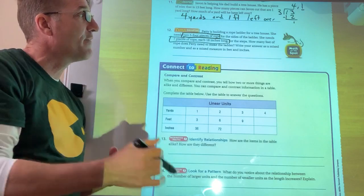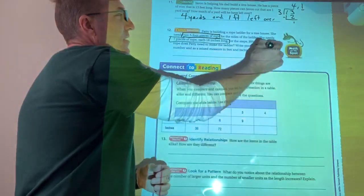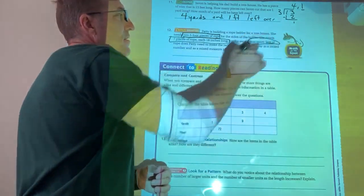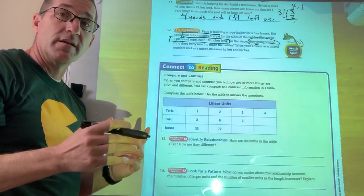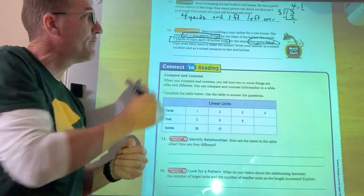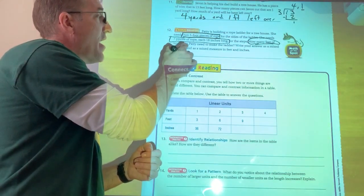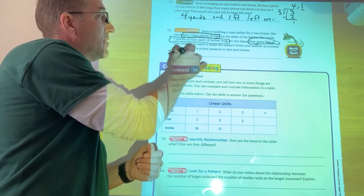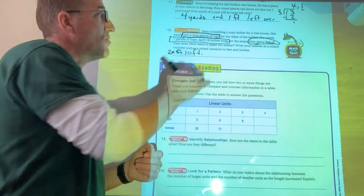The first thing is I know I got to find things in how many feet, right? That's my question. How many feet of rope? Well, the first part is easy. I've got two five foot pieces. So two times five is 10 feet, right?